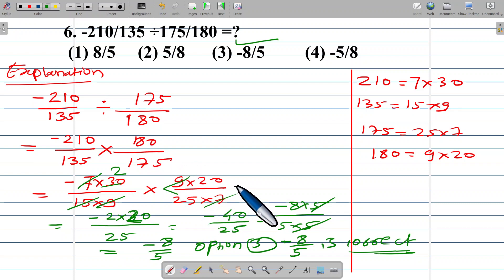180 means 9 into 20 and 175 means 25 into 7. Cancellation method used, this is common factor cancellation method, the common factors cancel and remainder.